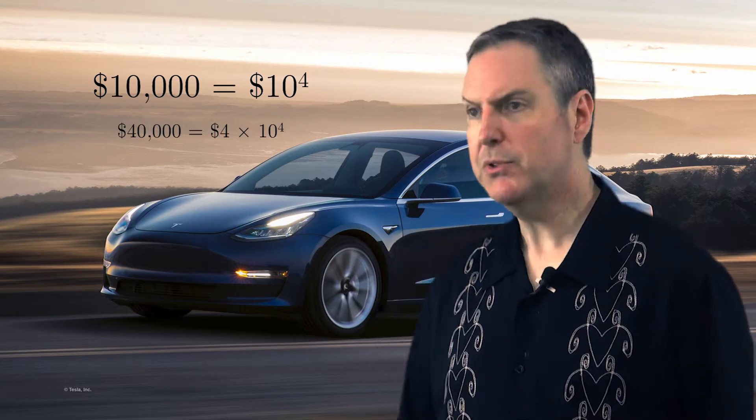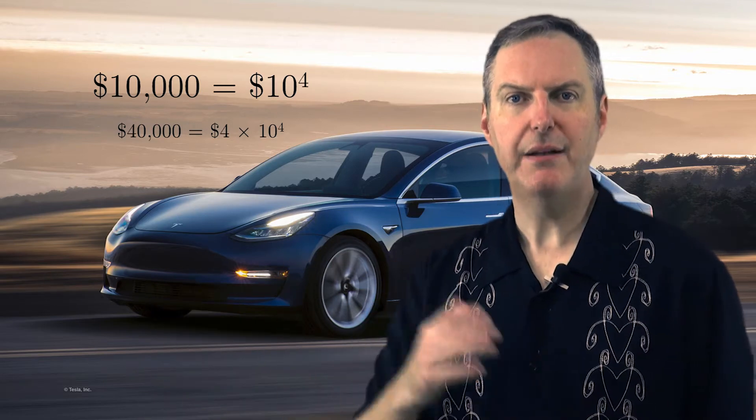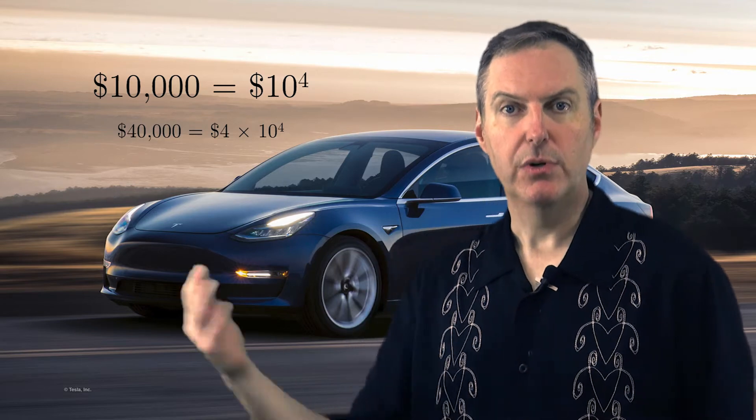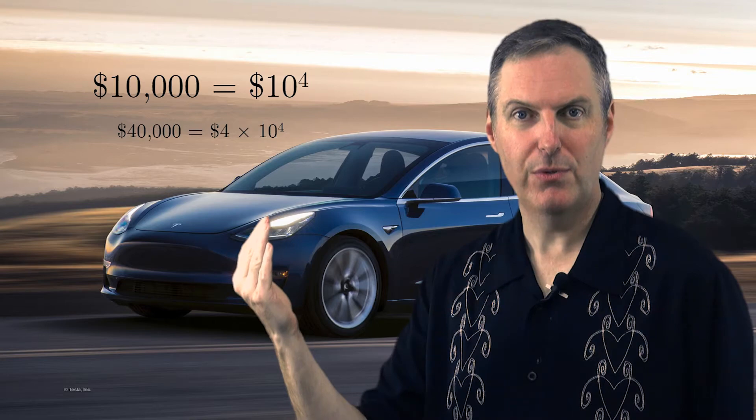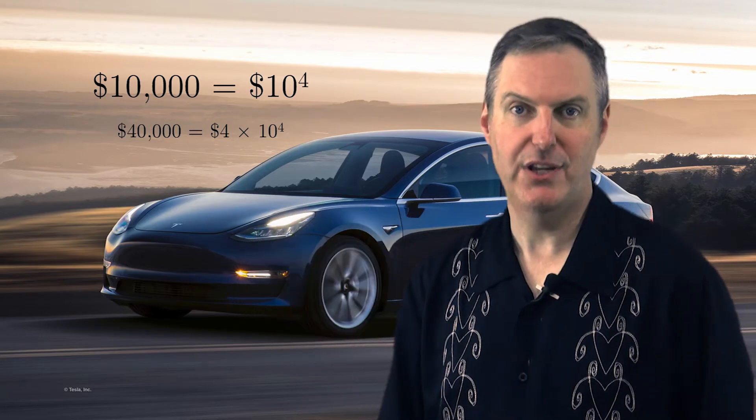So what this multiple does, what this number four does, is it tells us where within that power of ten ballpark we happen to be. In this case, we're one, two, three, four steps into that ten to the fourth range, but we haven't crossed into the ten to the fifth range yet.